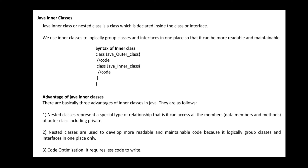First, nested classes represent a special type of relationship — they can access all the members of the outer class, including private members. Normally, another class cannot use the private members of another class. However, that restriction can be avoided by defining inner classes or nested classes. Any private members of the outer class can be accessed by the inner class.